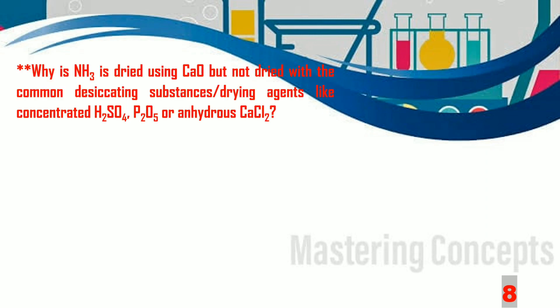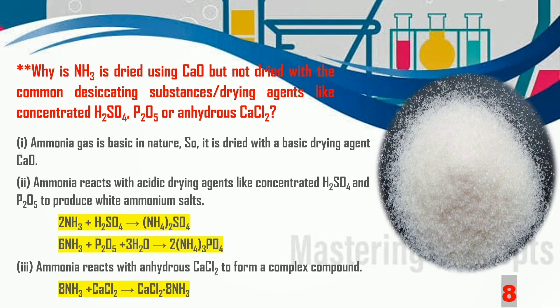You might wonder why calcium oxide is used for drying NH3 and not other drying agents like concentrated sulphuric acid, phosphorus pentoxide, or calcium chloride. You should remember that ammonia gas is basic in nature, and so is calcium oxide. Thus no reaction occurs between the two, and calcium oxide can be used as the drying agent.